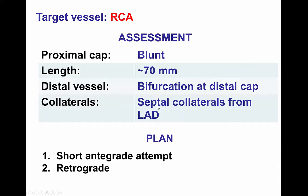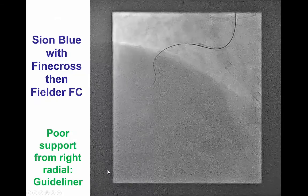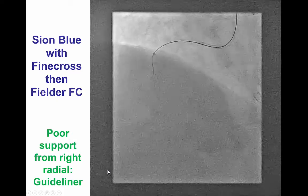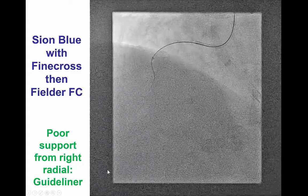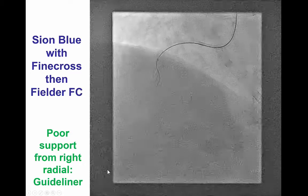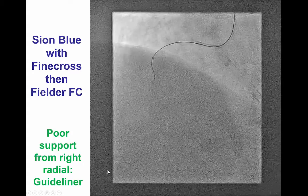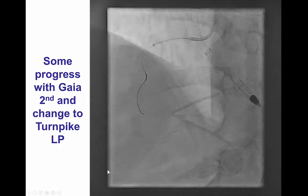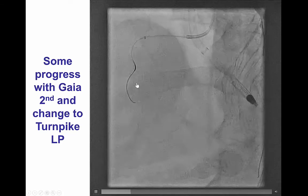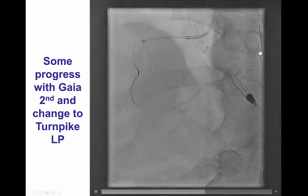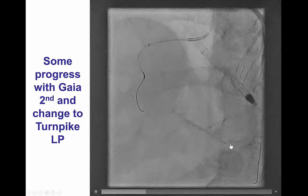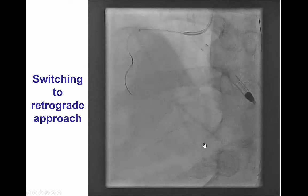There was a bifurcation at the distal cap. However, the patient had some nice septal collaterals from the LAD. The plan was to try antegrade crossing with wires first, with quick conversion to retrograde if initial antegrade attempts were unsuccessful. We did have difficulty with support and exchanged the guide catheter for an Amplatz, but were unable to engage the right coronary with an Amplatz guide catheter. Therefore, we continued with a JR4 and used a 6-French Guideliner. We then performed guide wire escalation using a Pilot 200 and Gaia Second wire, but the wire was stuck within the occlusion without much advancement. Given the excellent and multiple septal collaterals, we decided to attempt retrograde crossing.